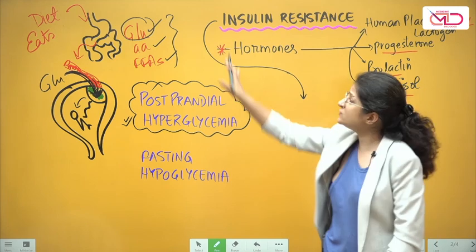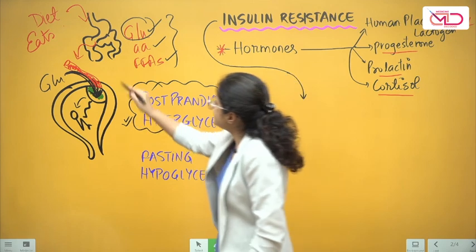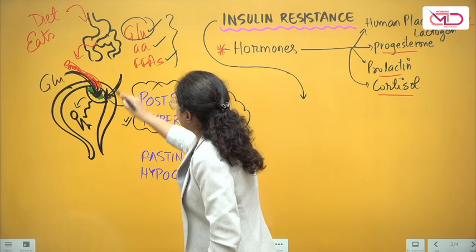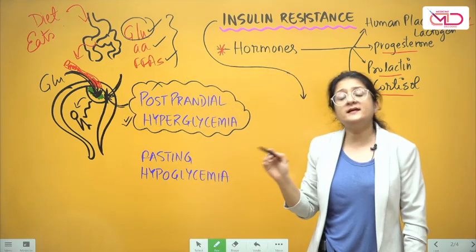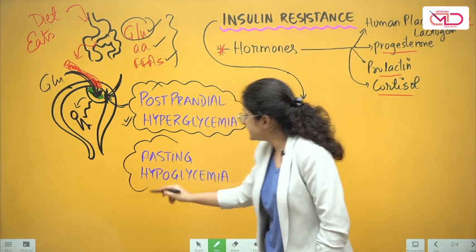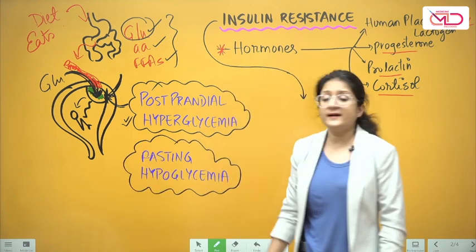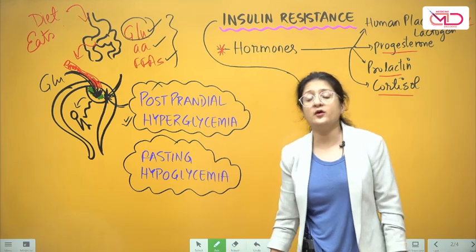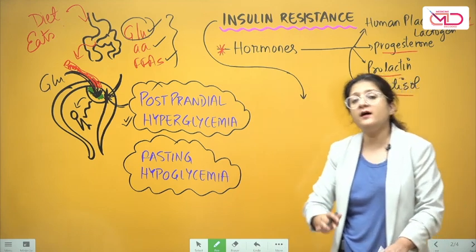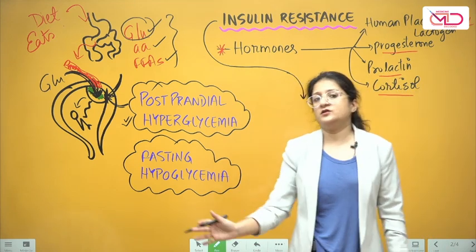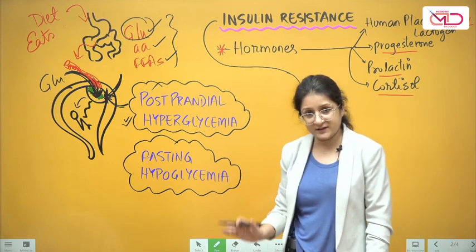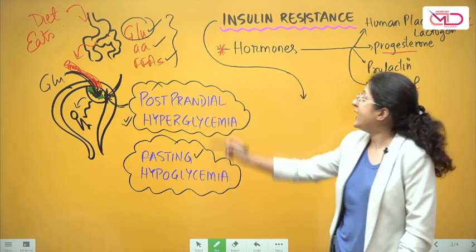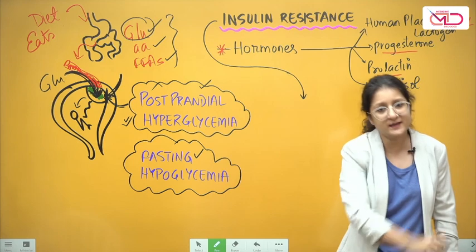Overnight, when the mother is not eating, glucose still moves into the placenta and is taken up by the baby. So when the mother wakes up in the morning, there is fasting hypoglycemia — not to the extent that she will faint, but lower than her non-pregnant fasting levels. So in summary, there is fasting hypoglycemia and postprandial hyperglycemia.